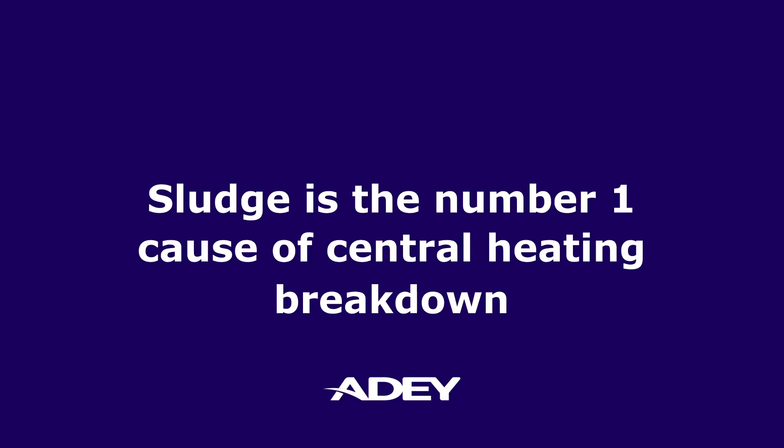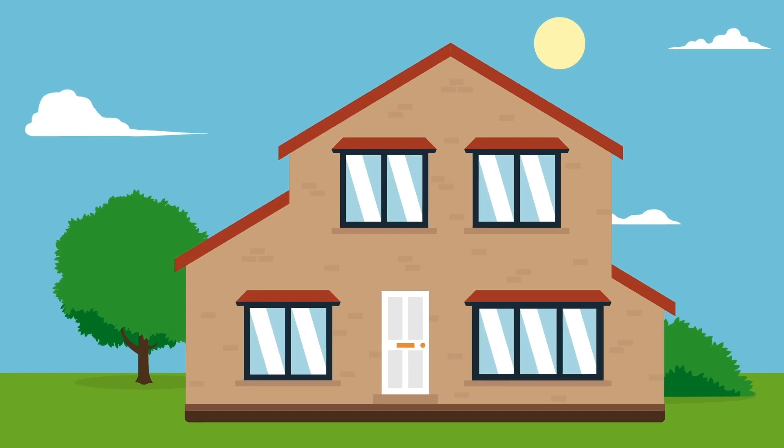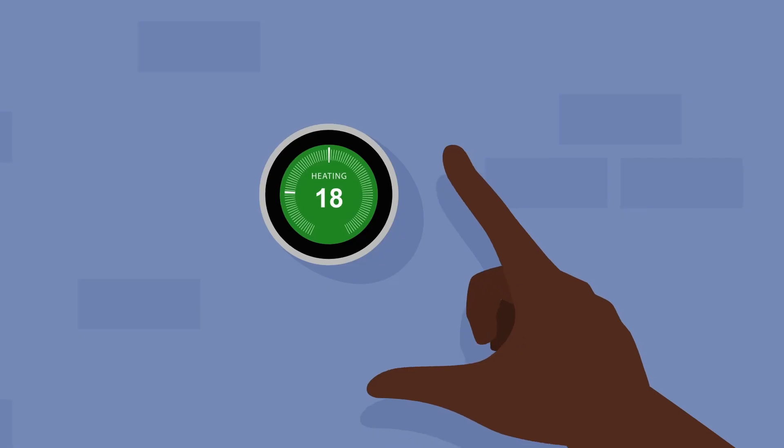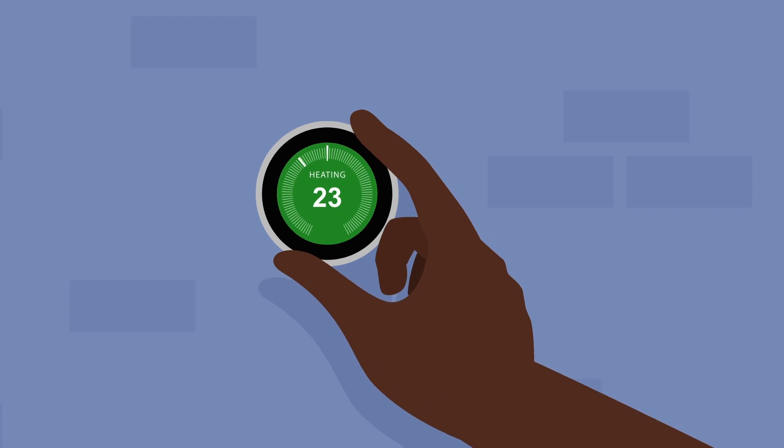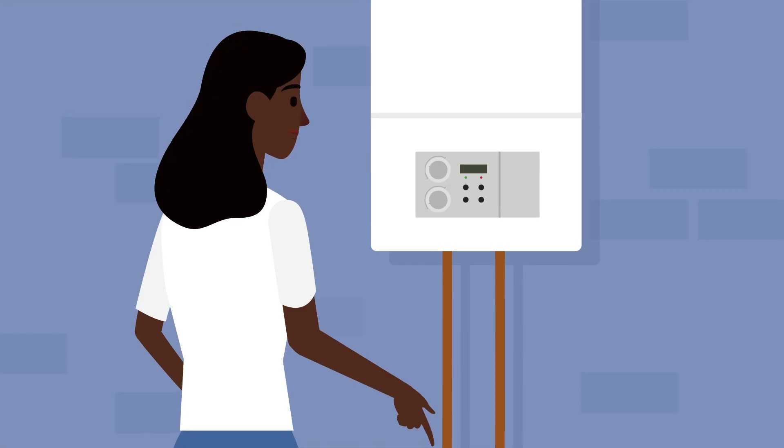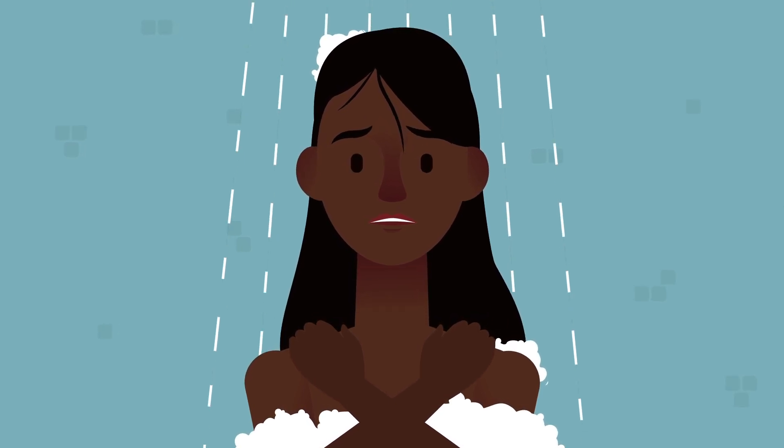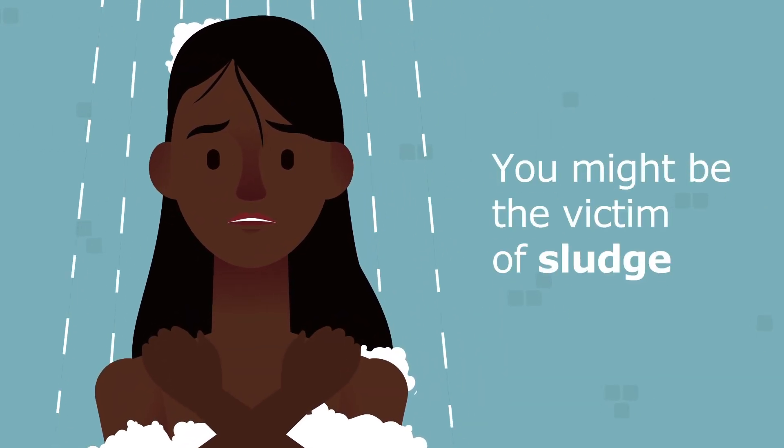Sludge is the number one cause of central heating breakdown. Do you have cold areas within your radiators? Are you always turning up the heating to make your home warmer? Do you have to regularly restart your boiler? Are you having to take cold showers? You might be the victim of sludge.